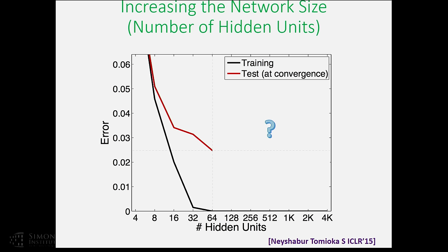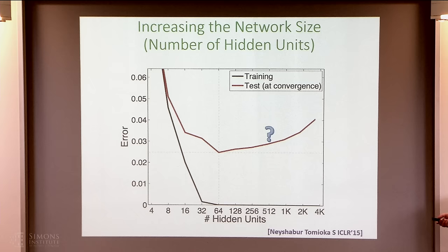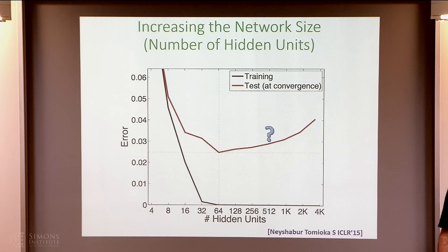With 1,000 or 2,000 hidden units — way more parameters than data points — we should expect wild overfitting and completely junk generalization. This is the kind of curve we show people in their first machine learning lecture. But when we actually do this, we observe something very different. The training error continues dropping quite significantly after the test error stops dropping at all. Even more surprisingly, the test error never wildly overfits: it can increase slightly on some datasets, but never catastrophically.